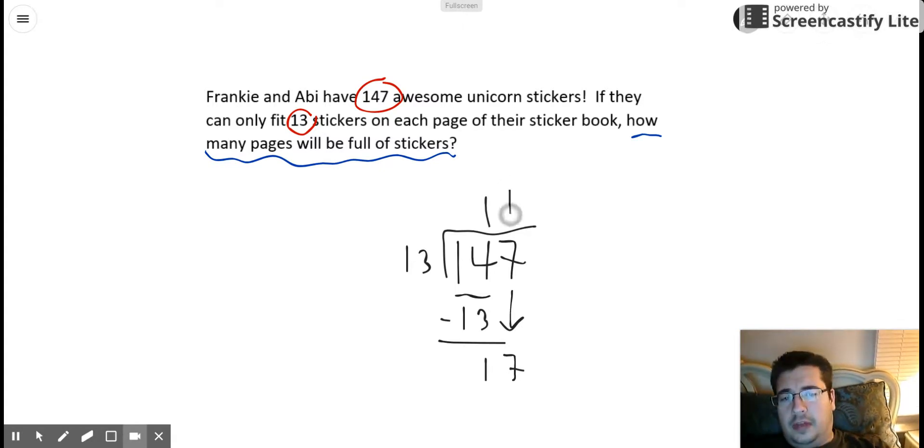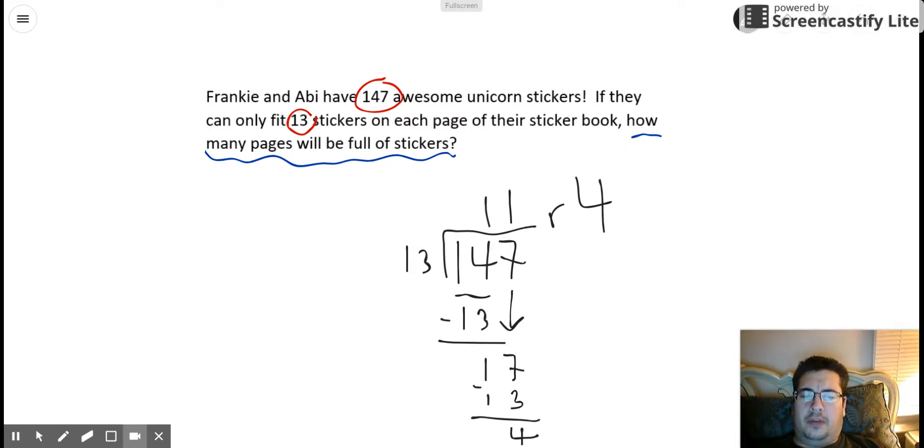The answer again is yes, it's 1. One times 13 is going to give us 13, and then the difference of 13 and 17 is 4. So when I divide 147 by 13, I end up with 11 remainder 4. So how can I interpret this? Well, this tells me...